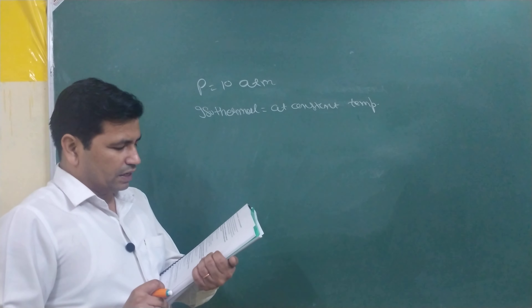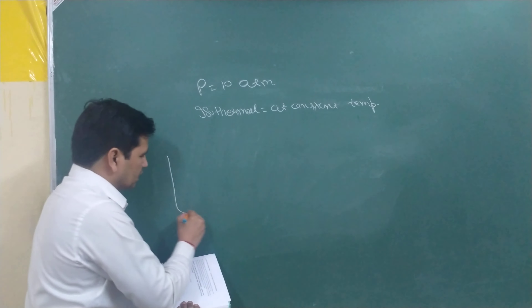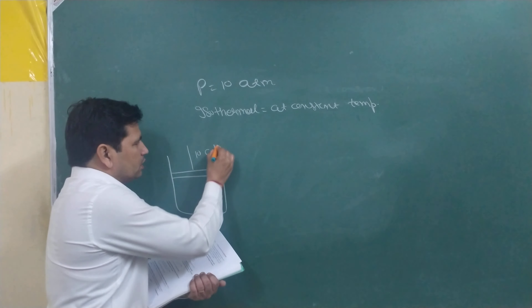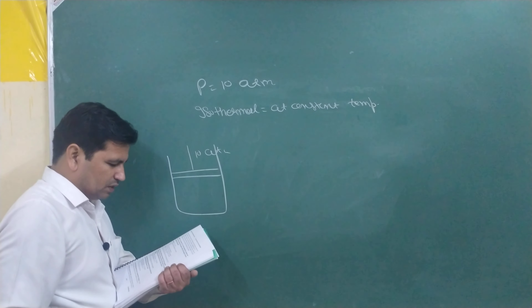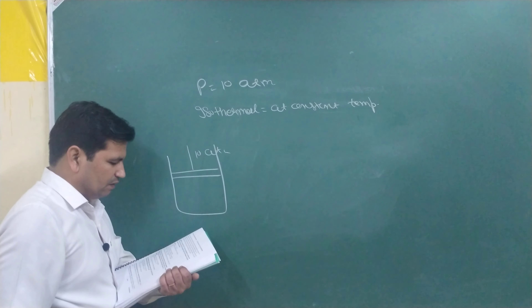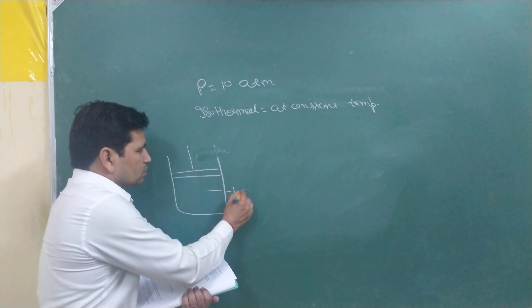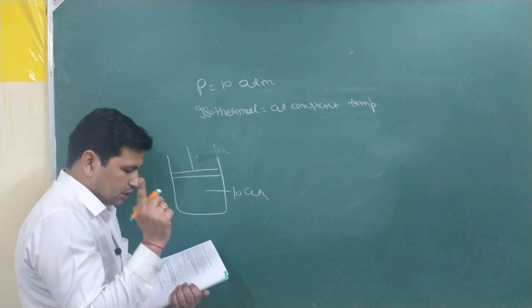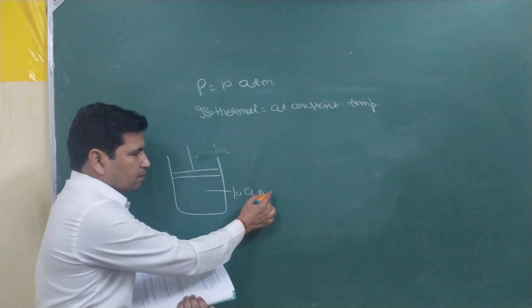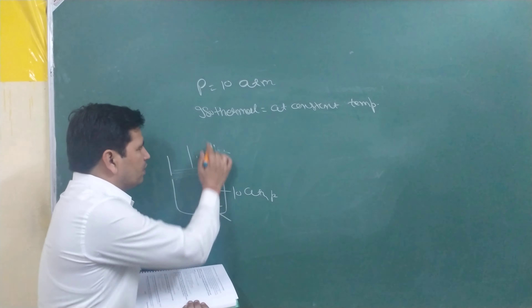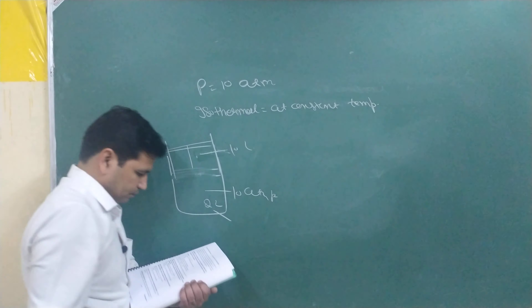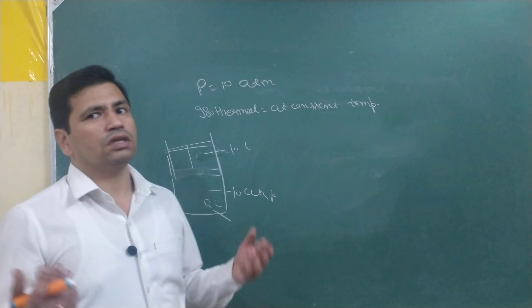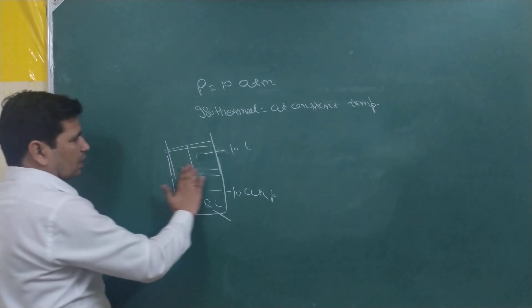The key word here is 'into vacuum.' We have 2 liters of ideal gas at 10 atmosphere pressure, expanding isothermally at 25 degrees Celsius into vacuum until its volume becomes 10 liters. The gas was initially 2 liters at 10 atmosphere and expanded to 10 liters. Calculate how much heat is absorbed and how much work is done during this expansion.